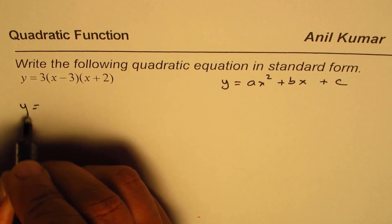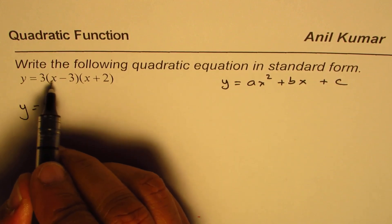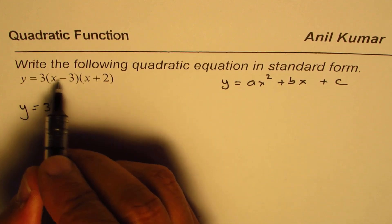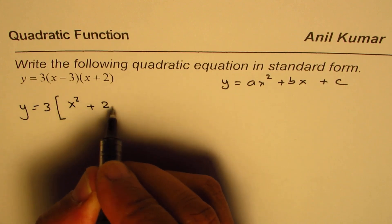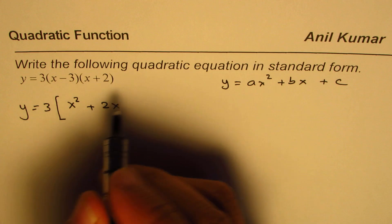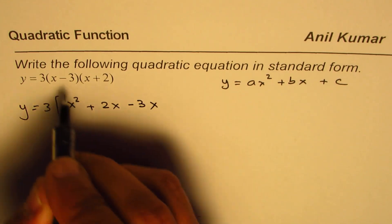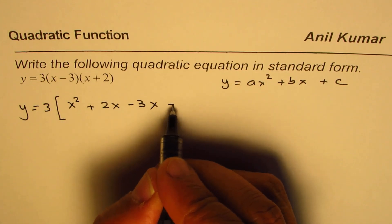So we have y equals to 3 times. So let us expand. We'll multiply these two. x times x is x squared plus 2x. Now multiplying by minus 3, we get minus 3x minus 3 times 2 is minus 6.